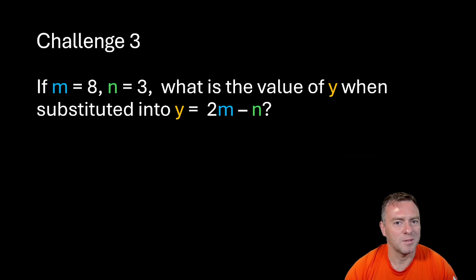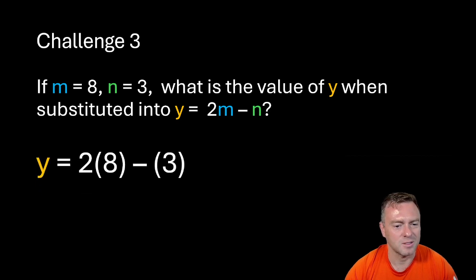The next one here we've got m is equal to 8, n is equal to 3. What's the value of y when substituting y is equal to 2m minus n? So we've got 2 lots of 8 minus 3 which would give us 13.